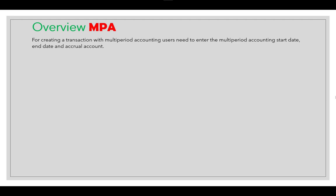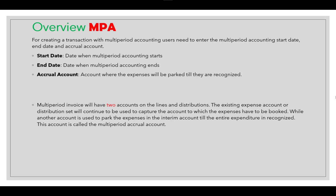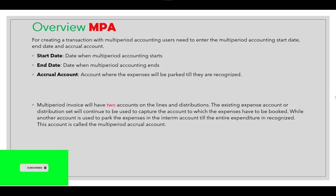Multi-period accounting features allow users to create accounting entries across more than one accounting period for a single accounting event. The functionality is primarily used to defer recognition of expenses incurred across multiple GL periods through which the benefits will accrue — for example, expenses incurred on an annual maintenance contract for equipment, rent paid in advance, etc. For creating a transaction with multi-period accounting, the user needs to enter a start date, end date, and accrual account. The multi-period accounting invoice will have two accounts at the line and distribution levels.